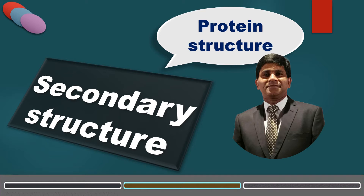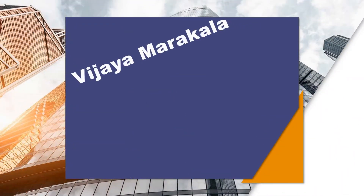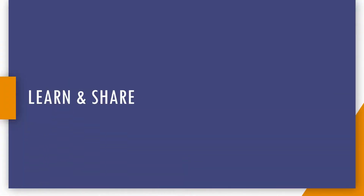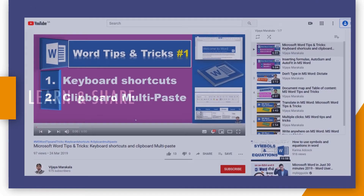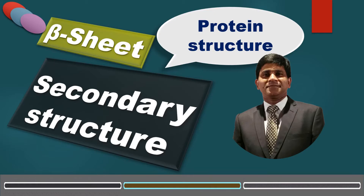Have you ever wondered why silk is stronger? It is because it is made up of a type of secondary structure called beta sheet or beta pleated sheet. Hello everyone, this is Dr. Vijay. Today we are going to study the secondary structure that is beta pleated sheet.